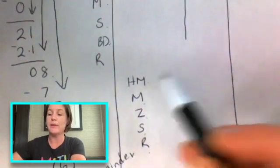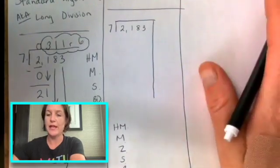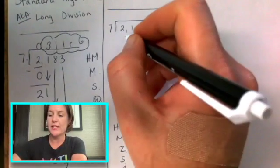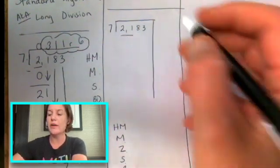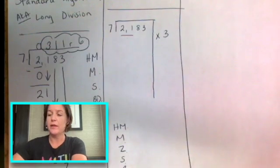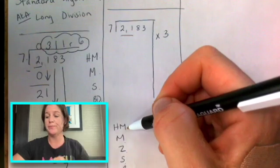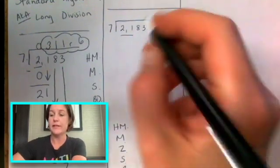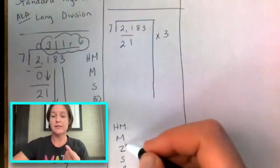So let's do how many. How many sevens will it take for us to get as close as we can to two? Zero, right? So what we're going to do is just think about the 21. How many times would it take us to get to 21? We've already said three times, right? This is the how many step. Seven, 14, 21. Seven times three is 21.